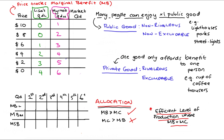When we have a private good, we find the marginal benefit associated with each unit by constructing our market demand. We get market demand by considering, for each price, the sum of the quantities demanded. At a price of $10, Lisa demands zero and Murthal demands one, so one unit is demanded in total. At a price of $8, Lisa demands zero and Murthal demands two, so two units are demanded. At a price of $6, Lisa demands one and Murthal demands three, so four units are demanded in total.